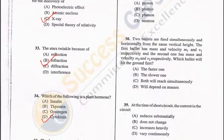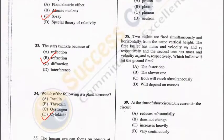Question 38: Two bullets are fired simultaneously and horizontally from the same vertical height with masses m1, m2 and velocities v1, v2. As both bullets are fired in the horizontal direction from the same height, both will hit the ground simultaneously — C is the correct answer.